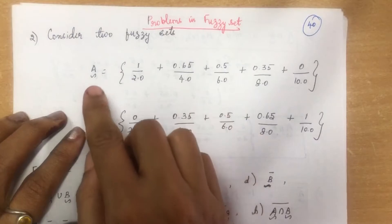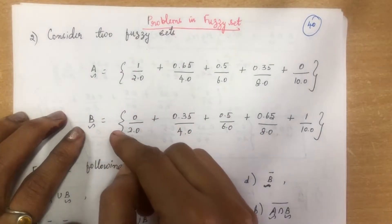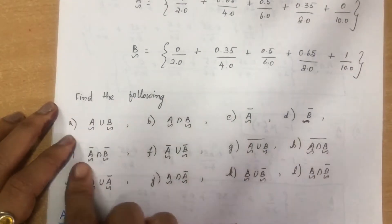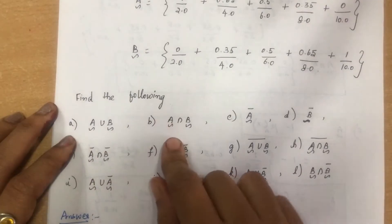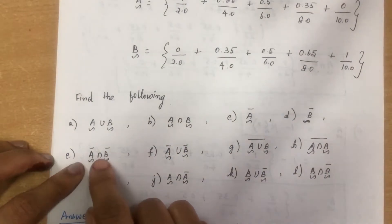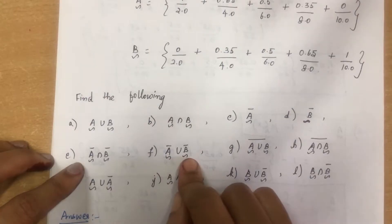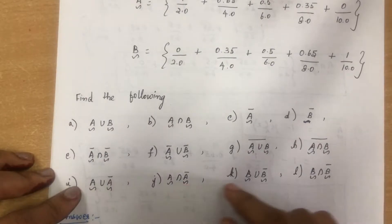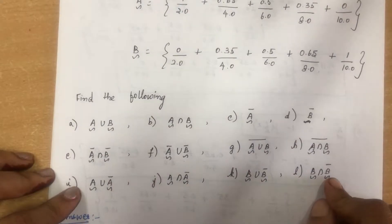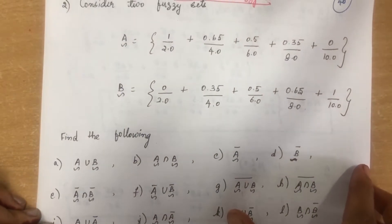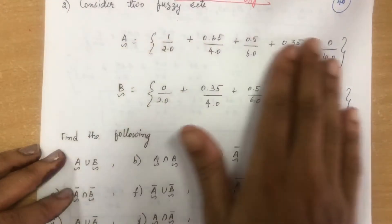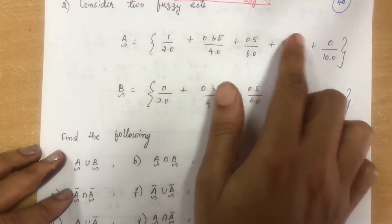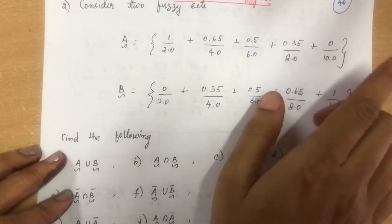For these two fuzzy sets A and B, we are going to perform fuzzy operations like union and intersection. We will find: A union B, A intersection B, A bar, B bar, A bar intersection B bar, A bar union B bar, A union B whole bar, A intersection B whole bar, A union A bar, A intersection A bar, B union B bar, and B intersection B bar. In fuzzy sets, numerator values are the fuzzy membership values and the denominator contains the elements.